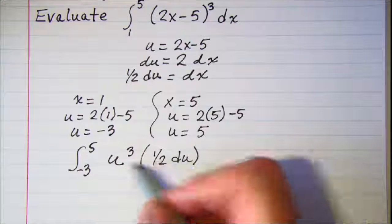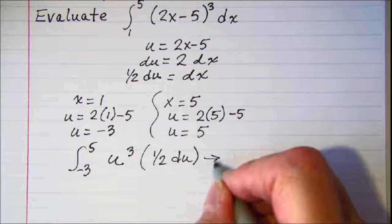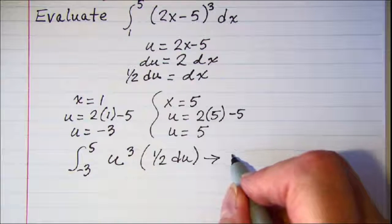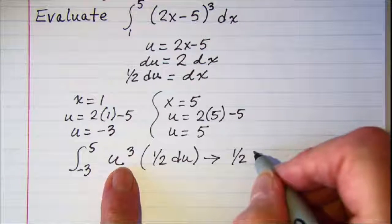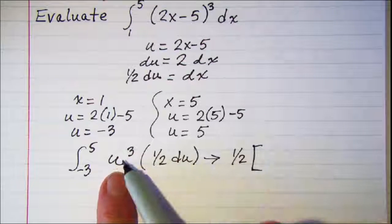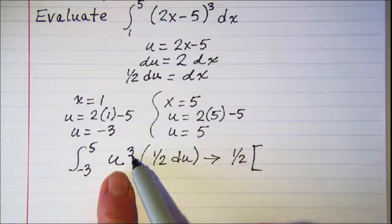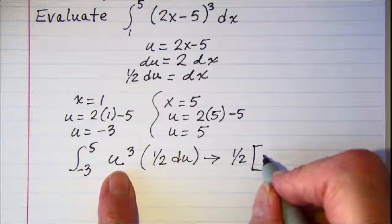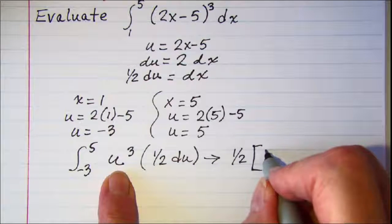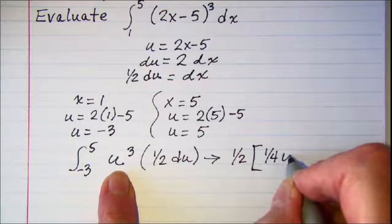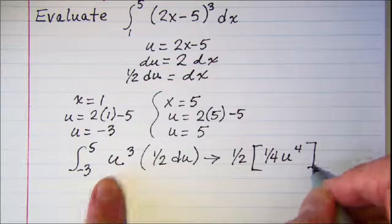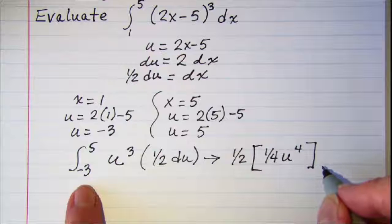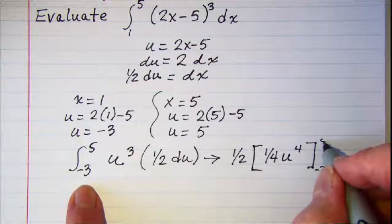Let's pull our one half out in front and then integrate. We increase the exponent by 1 and divide by the new exponent, giving us one fourth u to the fourth power, evaluated from negative 3 to 5.